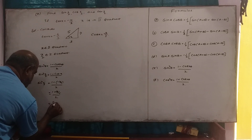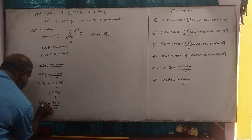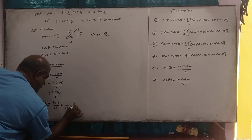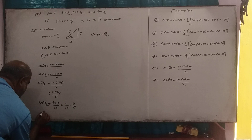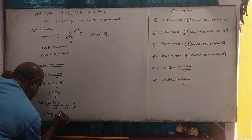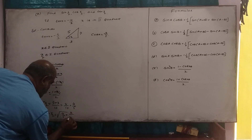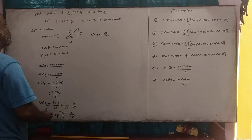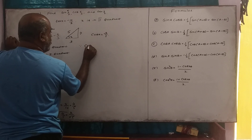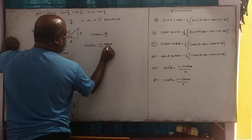5 plus 4 is equal to 9. Then sin squared x by 2 is equal to 9 over 10. So sin x divided by 2 is equal to root of 4 divided by root of 5, which simplifies further.